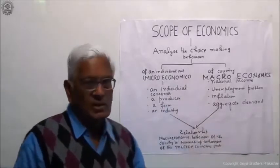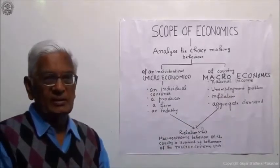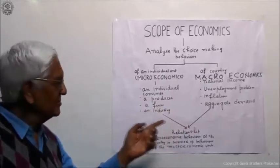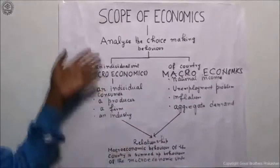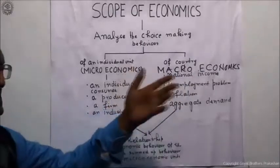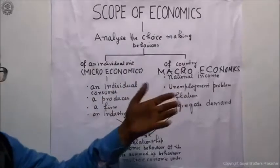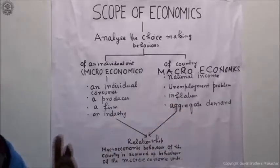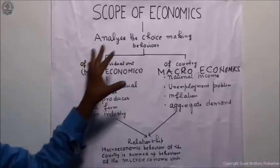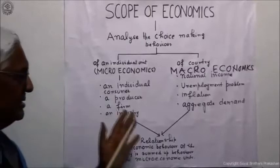To clarify: when we talk about an individual unit — whether that unit is a consumer, a producer, a firm, or an industry — we are studying microeconomics. But when we talk about things like national income, the unemployment problem in the country, inflation, or aggregate demand of the country, then we are talking about macroeconomics. So your entire economics is divided into these two categories: microeconomics and macroeconomics.